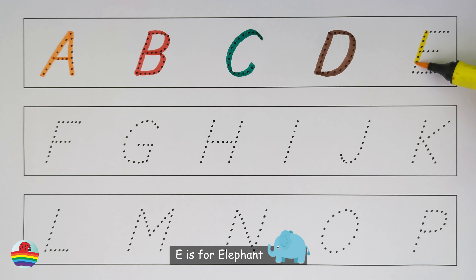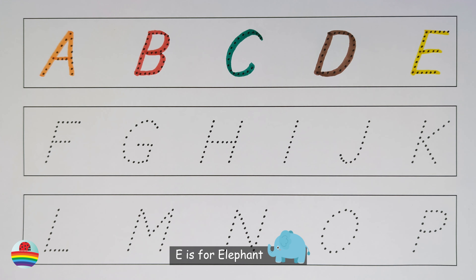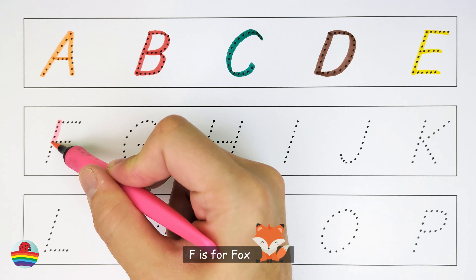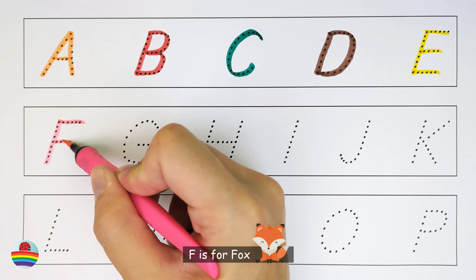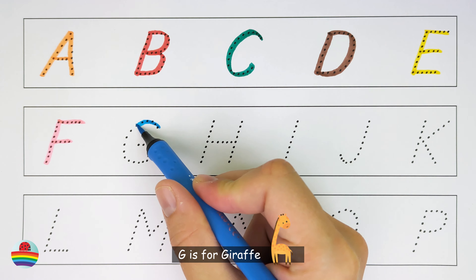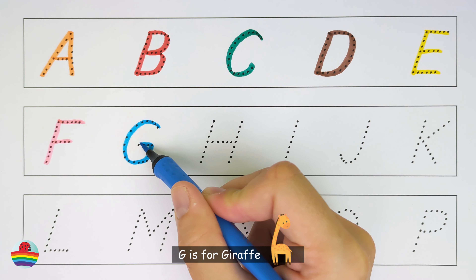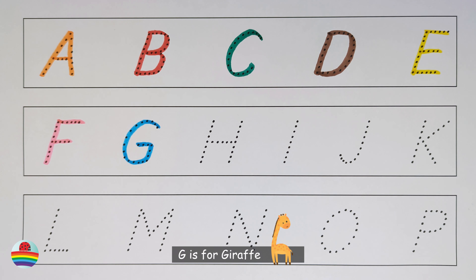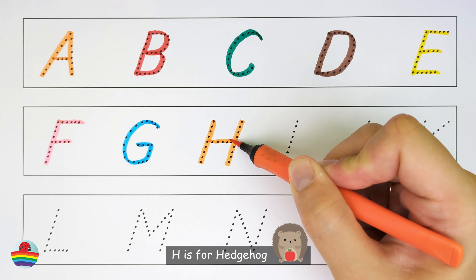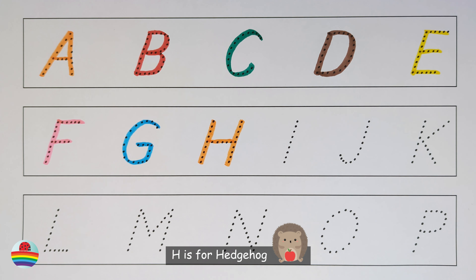E. E is for elephant. E. F. F is for fox. F. G. G is for giraffe. G. H. H is for hedgehog. H.